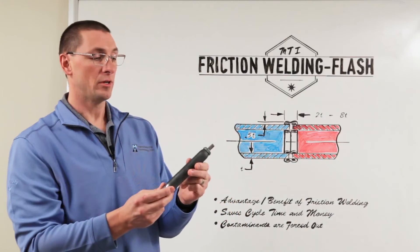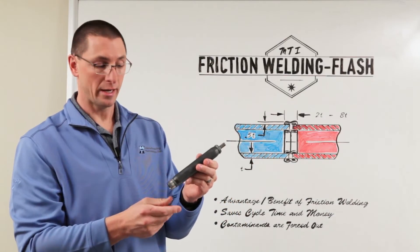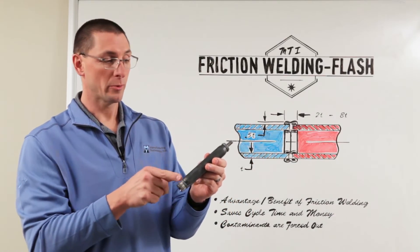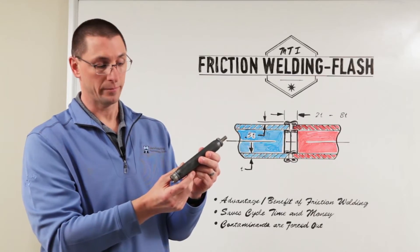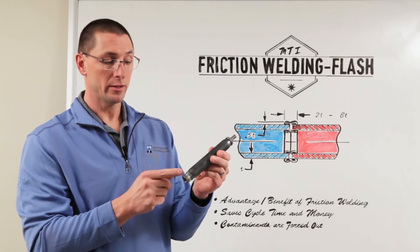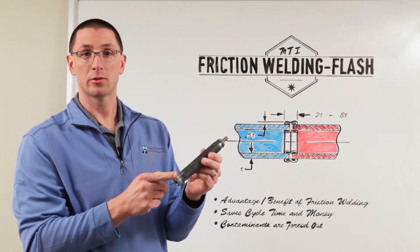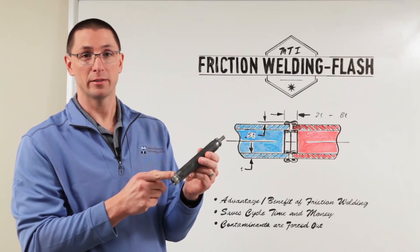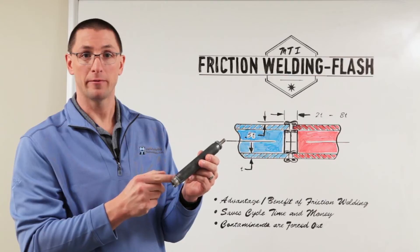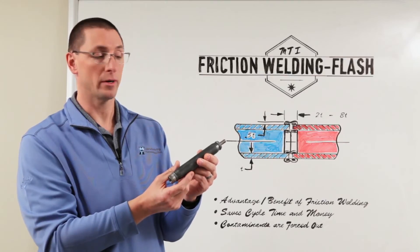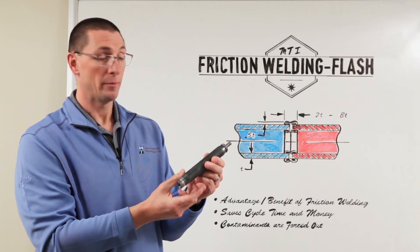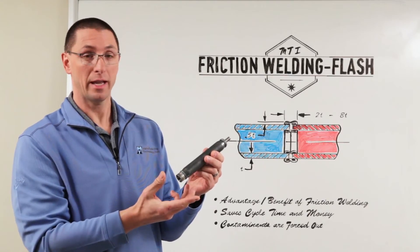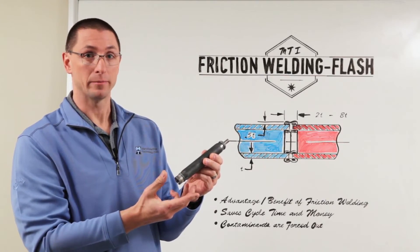Here's an example of an automobile airbag inflator where we leave the flash on after welding. This flash is integral to the assembly. It's not going to flake off, it's not going to come apart in operation, but in some cases it can be left on.